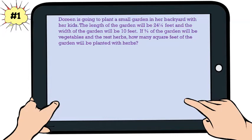Let's try our practice problem together. Doreen is going to plant a small garden in her backyard with her kids. The length of the garden will be 24 and one fourth feet and the width of the garden will be 10 feet. If three fourths of the garden will be vegetables and the rest herbs, how many square feet of the garden will be planted with herbs? First, we need to draw a diagram to represent the problem and write our formula.